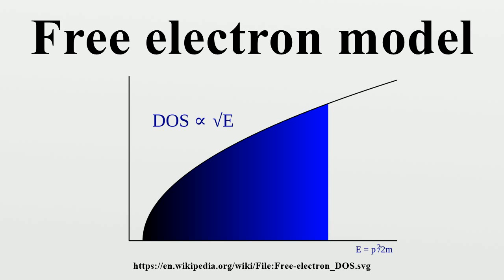Observed values are in reasonable agreement with this theoretical prediction for a large number of materials. Below the plasma frequency, the dielectric function is negative and the field cannot penetrate the sample. Light with angular frequency below the plasma frequency will be totally reflected. Above the plasma frequency, the light waves can penetrate the sample.